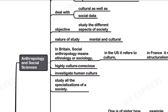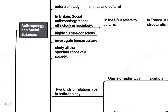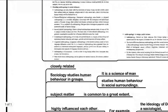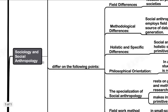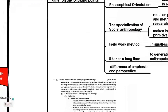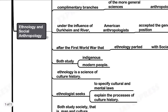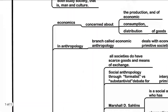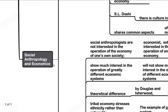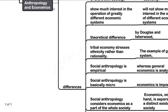Social science, by definition, is the study of human society. We will be studying how the study of human society concerning human behavior and culture, which is in the arena of social science, is related to anthropology. Then we will discuss the relationship of sociology and social anthropology, followed by the relationship of ethnology and social anthropology, and finally the relationship of social anthropology and economics.